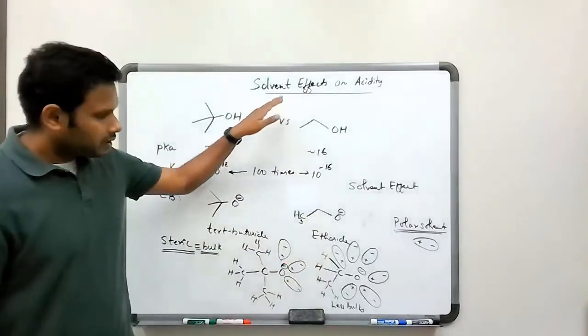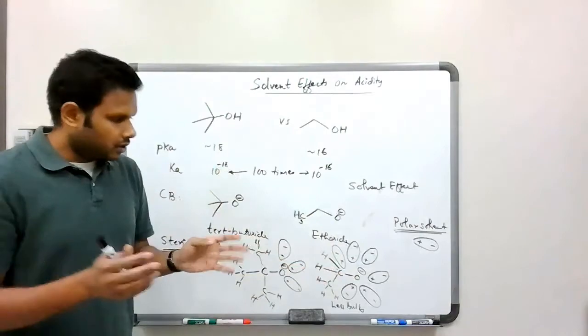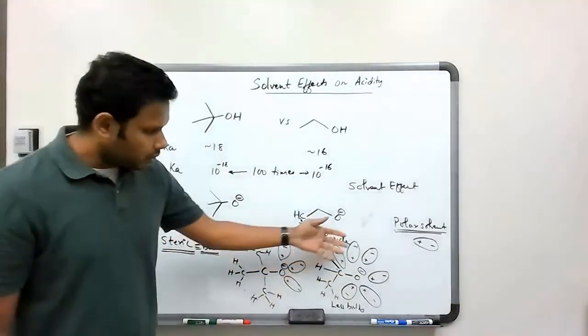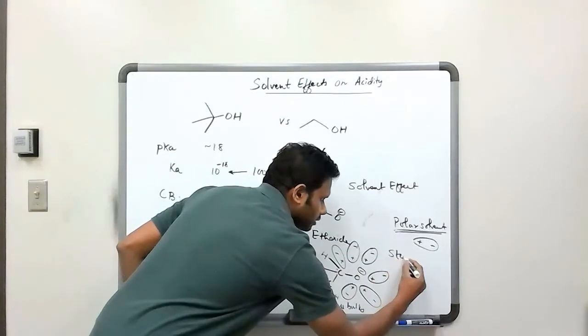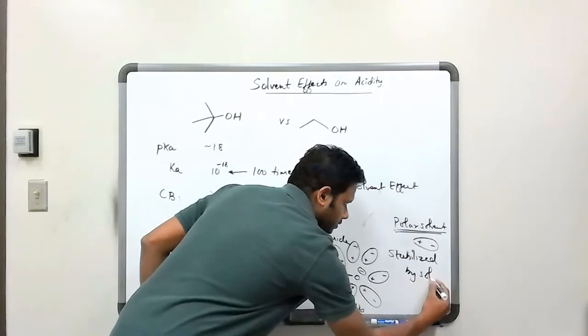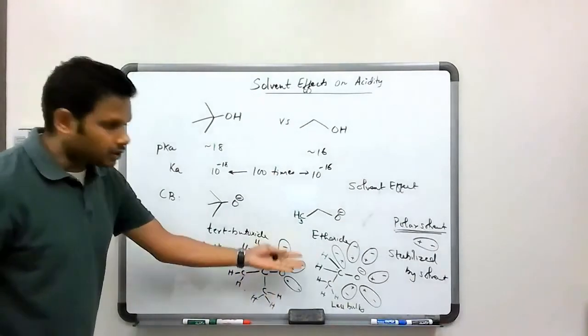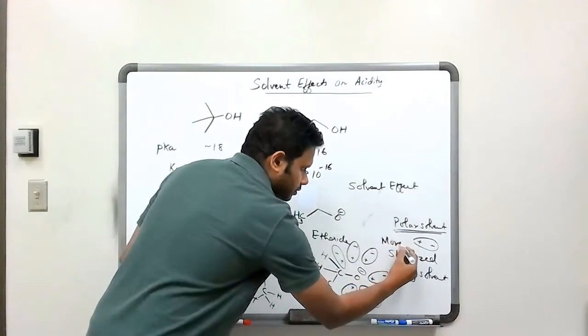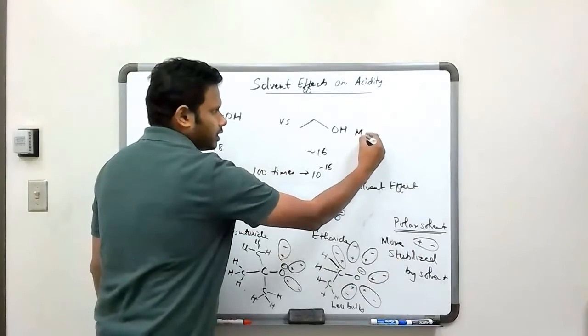So this oxygen feels less stabilized for that reason. So the solvent can affect the stability of the conjugate base just by arranging around that conjugate base. And so if this conjugate base is more stable, this is stabilized by solvent. Whereas this is not as much. This is also stabilized but not as much.